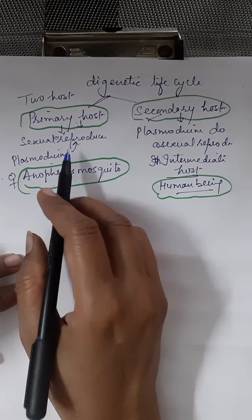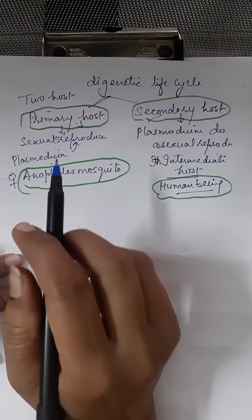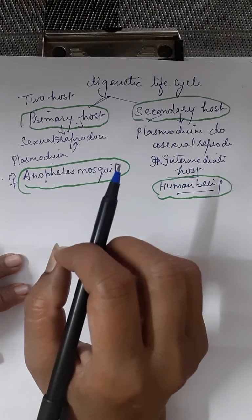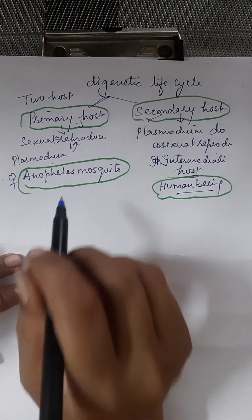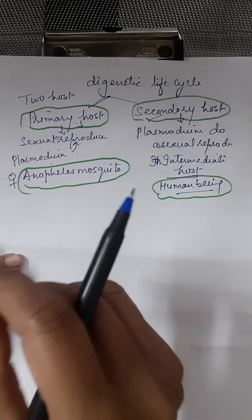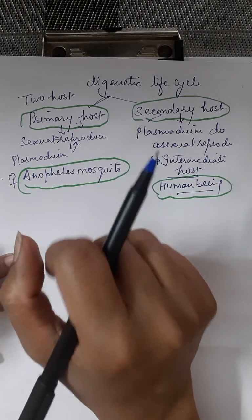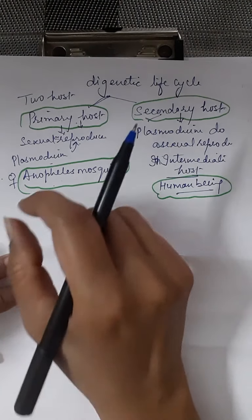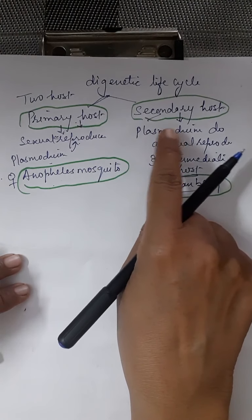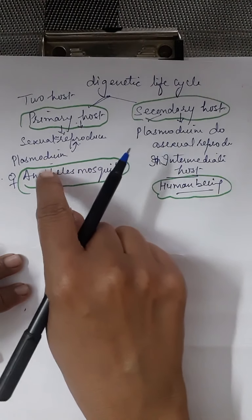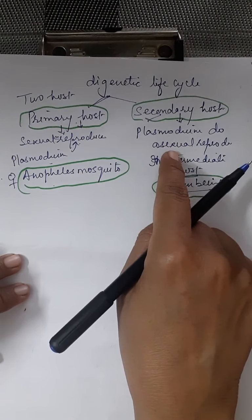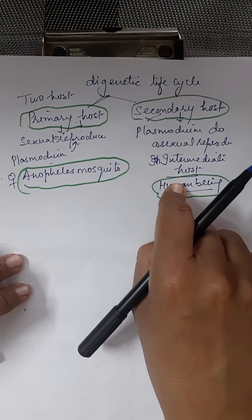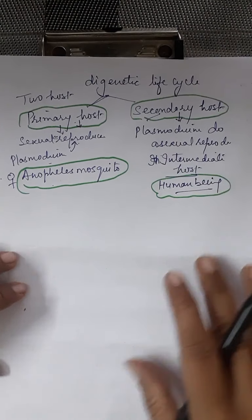Now, for the life cycle: when the female Anopheles sucks the blood from an infected person — that is, a person suffering from malaria — the gametocytes are taken in by the female Anopheles along with the blood. The gametocytes enter the mosquito and undergo fertilization. We will start the life cycle from the secondary host, because Plasmodium causes more damage to the secondary host, while it causes no damage to the primary host.